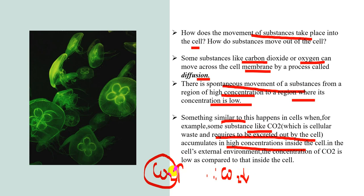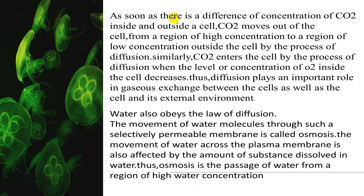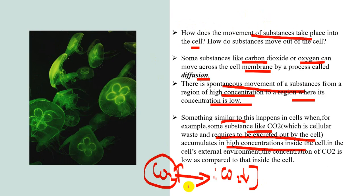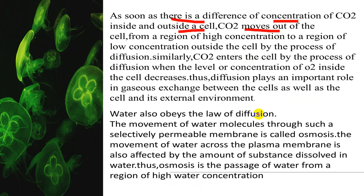So in diffusion, CO2 moves from higher concentration inside the cell to lower concentration outside. As soon as there is a difference in CO2 concentration inside and outside the cell, CO2 moves out of the cell — following the law of diffusion, from a region of higher concentration to a region of lower concentration.